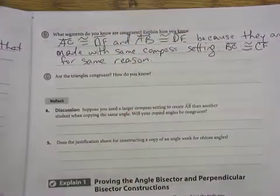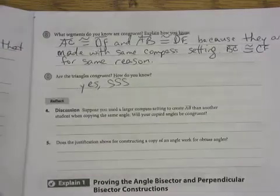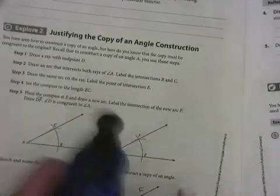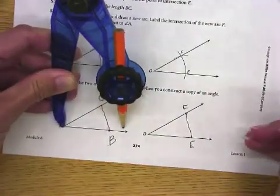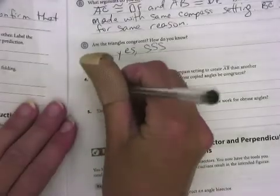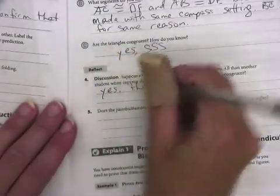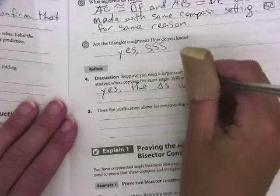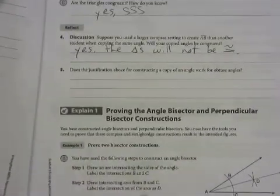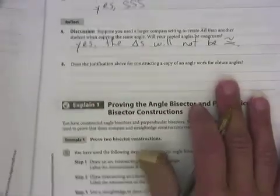We also know that BC is going to be congruent to EF for the same reason. Therefore, the triangles are congruent by side, side, side. Another student did copying the same angle - suppose you used this compass setting to make your random arc and your classmate used a different compass setting. The copied angles will be congruent, but the triangles will not be congruent. They're asking if this justification would work for an obtuse angle. Yes.